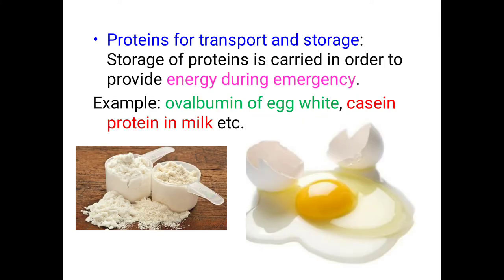Proteins can also be used as storage components of energy. A cell gains its structural stability and energy is stored in the form of storage components, which will be used during emergencies as and when required. The best examples are ovalbumin of egg white and casein protein of milk, which are the best known storage proteins.